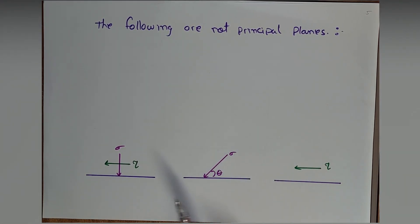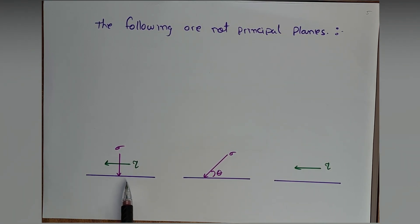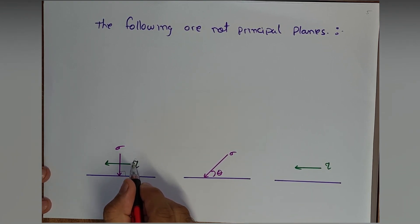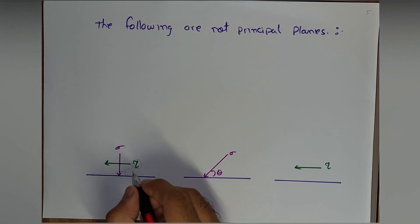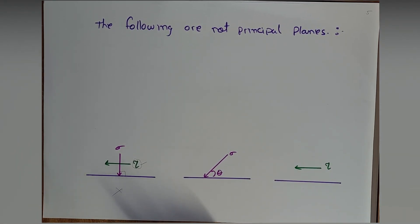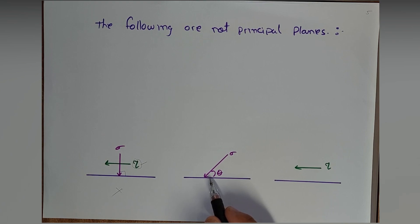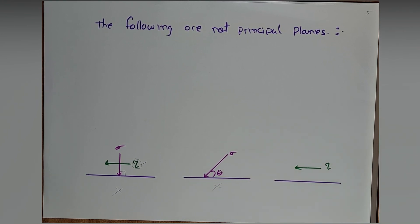Now here are examples of what are NOT principal planes. Looking at a two-dimensional plane from the side, only one dimension is visible, so it appears as a line. If normal stress is acting at 90 degrees but shear stress is also acting in any direction, then it is not a principal plane — because by definition, only normal stress acts on a principal plane, not shear stress. Also, if the stress is acting at a particular angle other than 90 degrees, it is again not a principal plane.